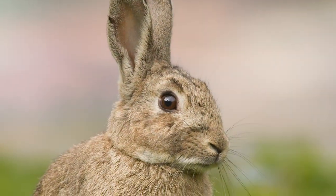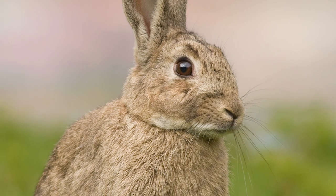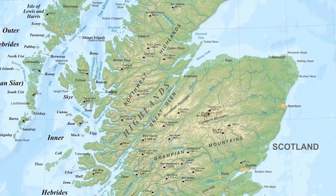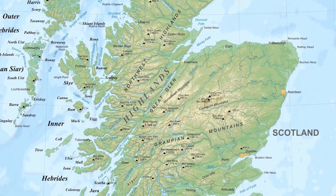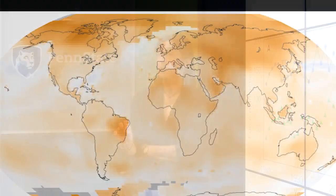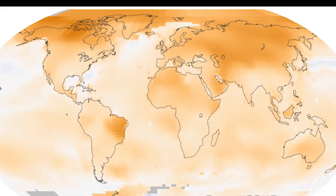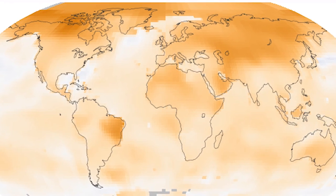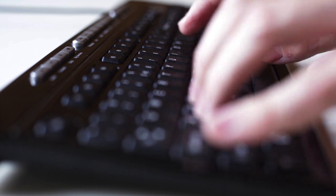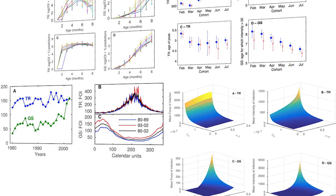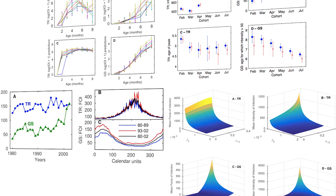We've been very lucky to be able to monitor this rabbit population in Scotland every month for 20 years. We had very detailed data on the rabbits and on the parasites, and we also found that in this area there's been clear evidence of climate warming. This is the dataset we used to develop these models to understand the role of climate change and immunity.